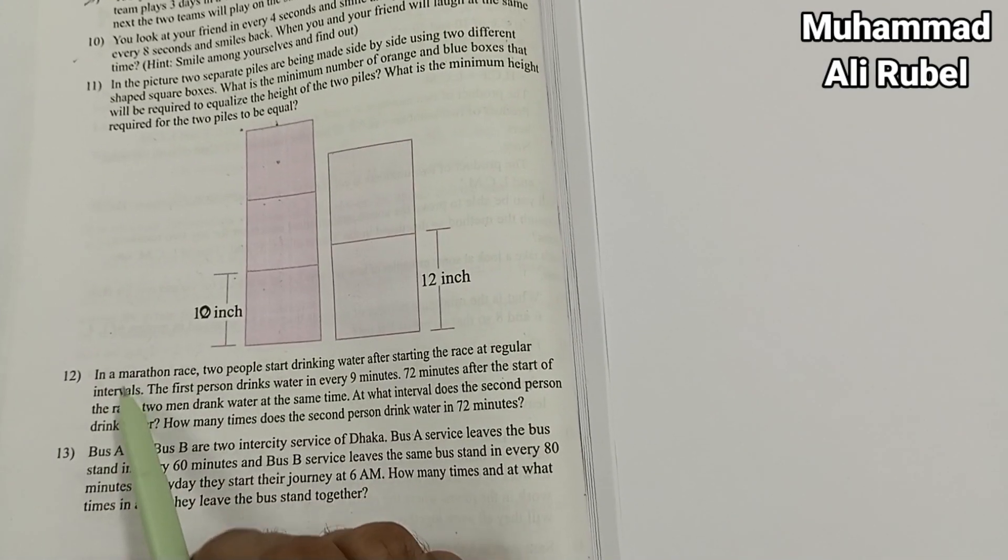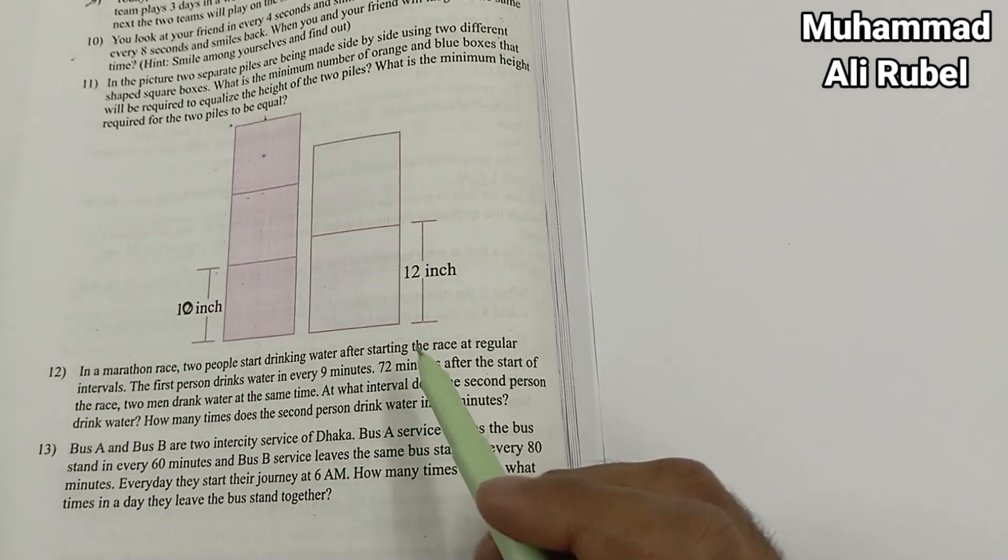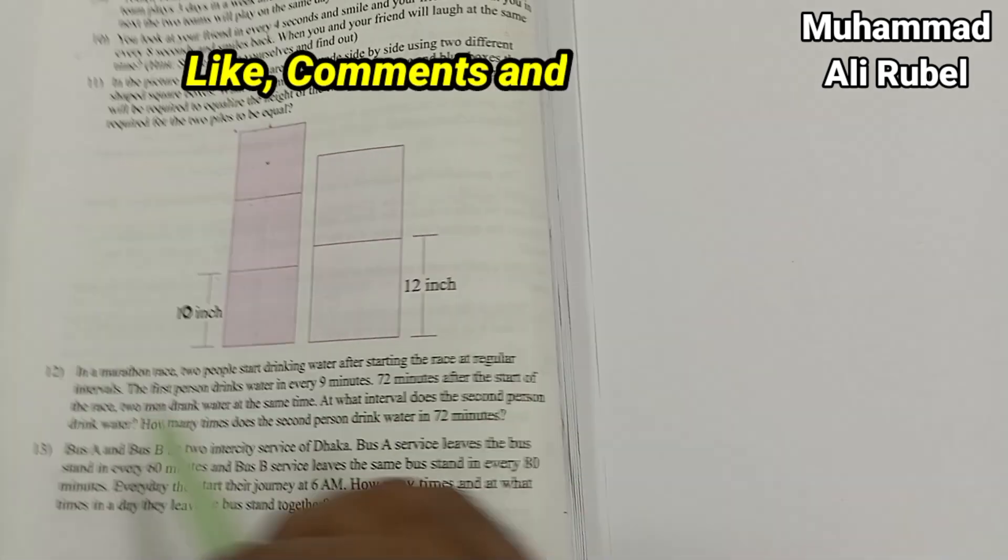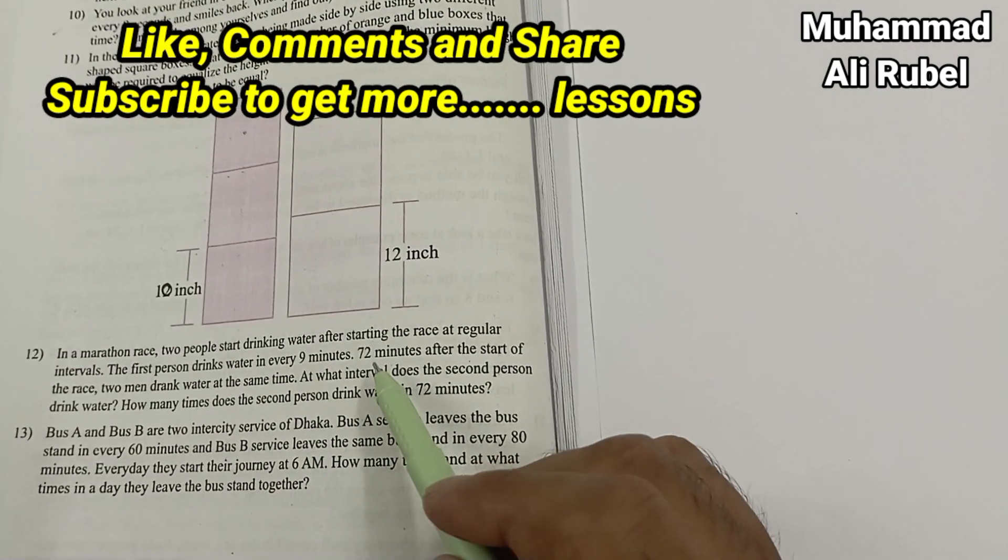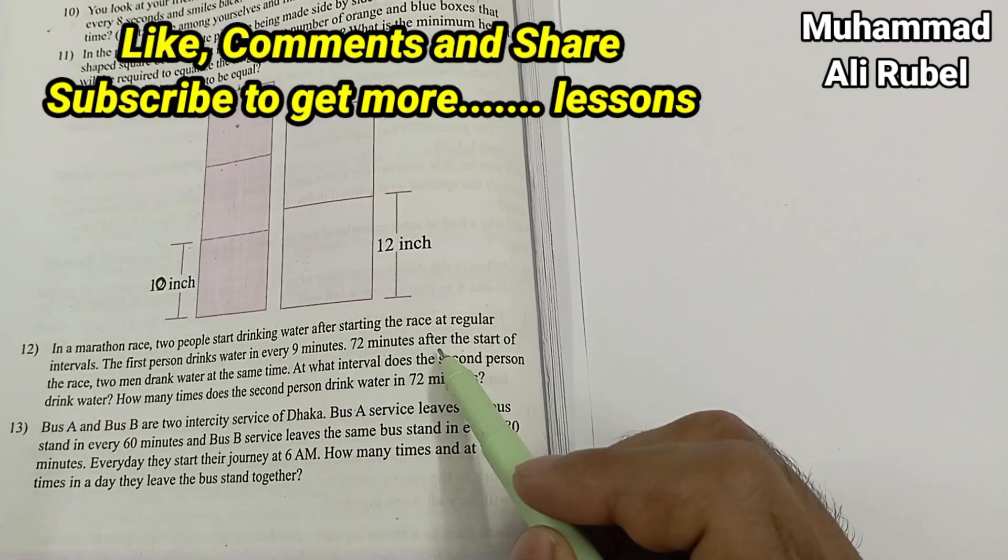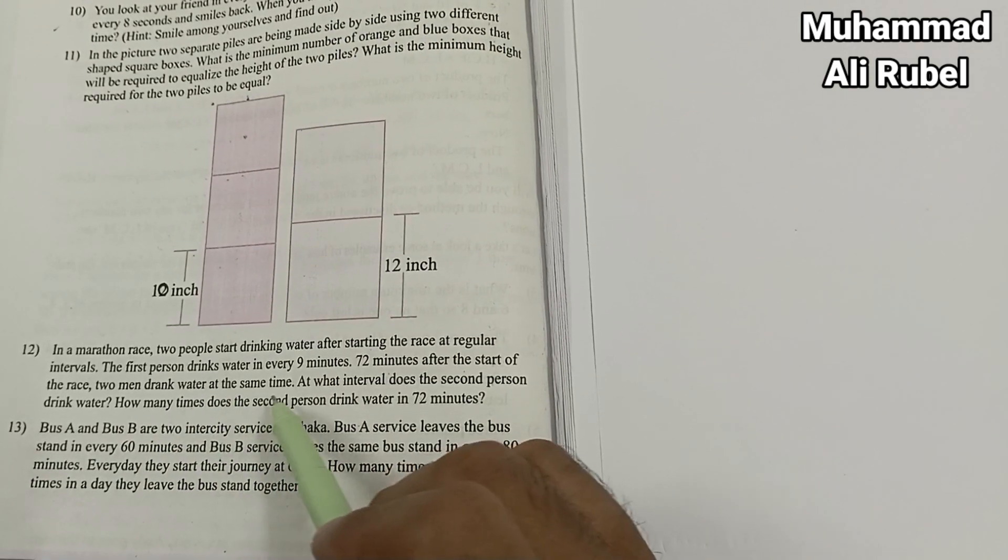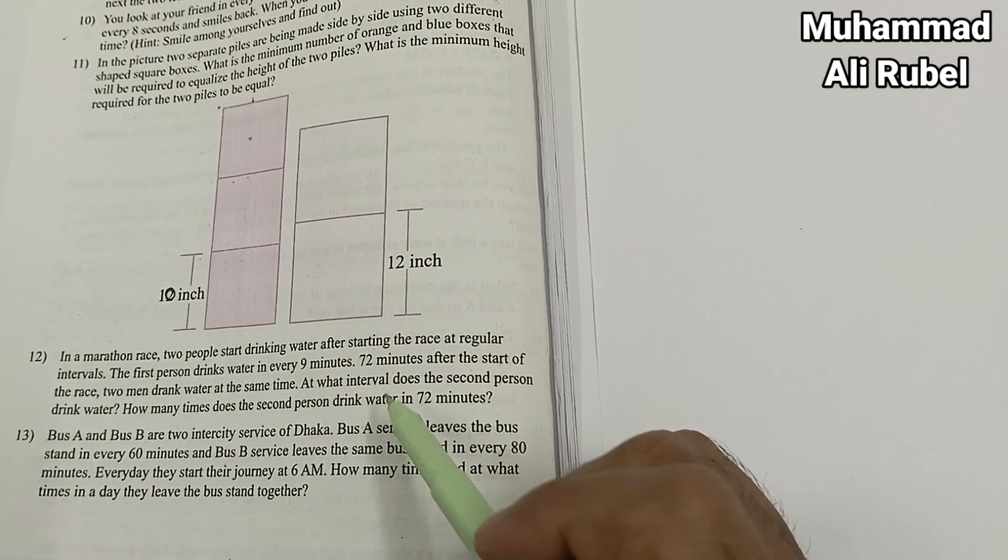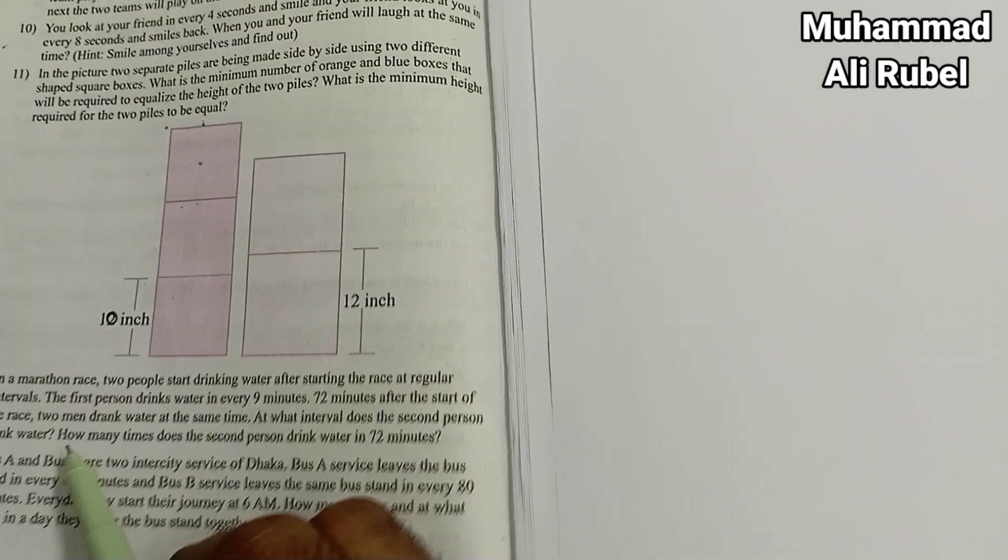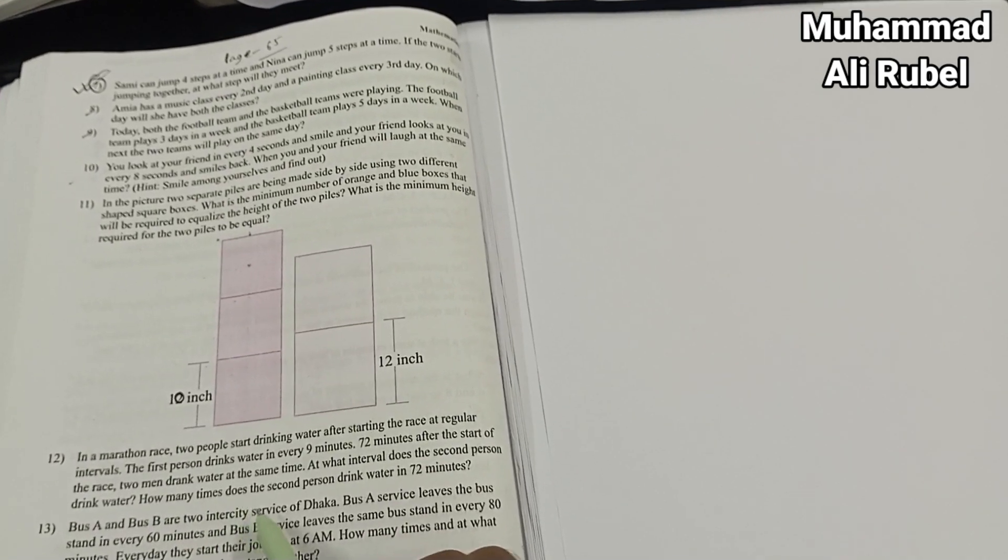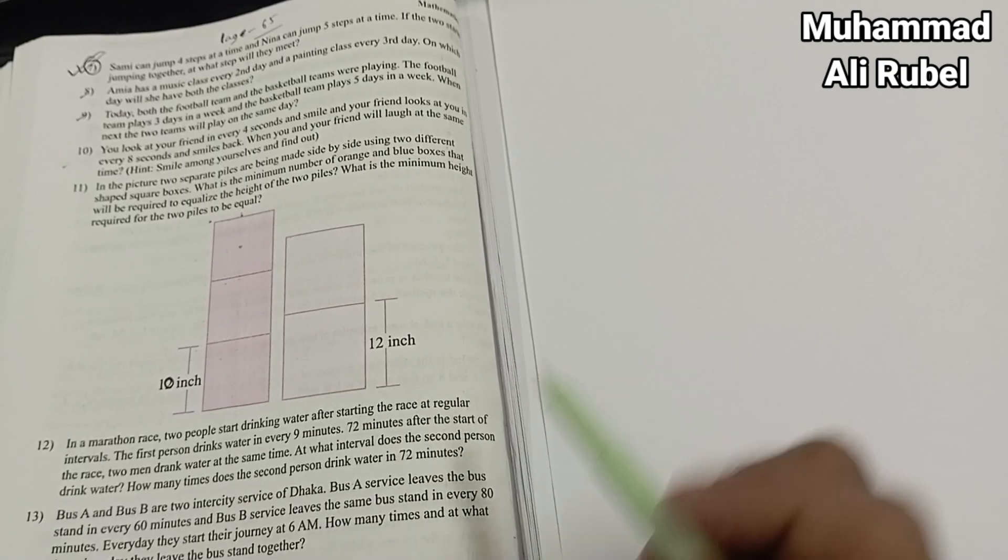Number 12: In a marathon race, two people start drinking water after starting the race at regular intervals. The first person drinks water every nine minutes. 72 minutes after the start of the race, two men drink water at the same time. At what interval does the second person drink water? How many times does the second person drink water in 72 minutes? Now I'm gonna solve it.